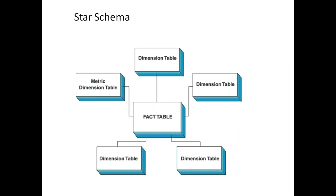There are different designs which the dimension model can have, and these designs have the preference of one design over another, but the simplest design is the star schema. Star schema is basically one single fact table connected directly to all the dimension tables. So if you have 10 dimension tables, there would be a fact table that you are using for the report, directly connected to all the 10 dimension tables.